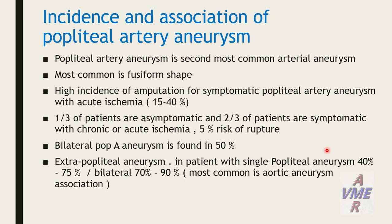Returning to our main subject — incidence and distribution of popliteal artery aneurysm. Popliteal artery aneurysm is the second most common arterial aneurysm, most commonly fusiform in shape. High incidence of amputation for symptomatic popliteal artery aneurysm up to 40%. One-third of patients are asymptomatic; two-thirds are symptomatic with chronic or acute ischemia. Low risk of rupture. Bilateral popliteal artery aneurysm is found in 50%. Extra-popliteal aneurysm has association in patients with single popliteal artery aneurysm in 40–75%.